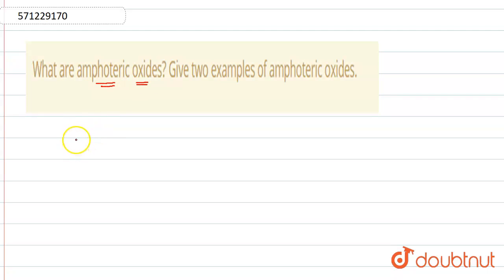First, we should know what are amphoteric oxides. These are those oxides which react with both acids and bases, both acidic oxide and basic oxides, to form salt and water.